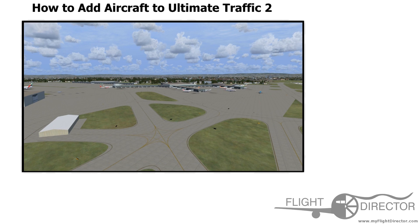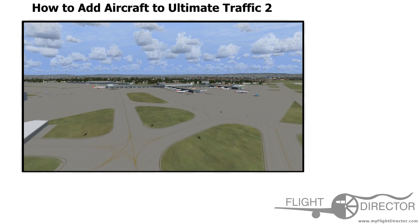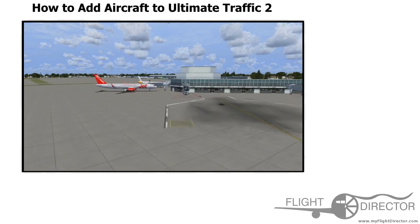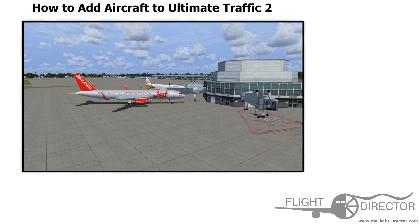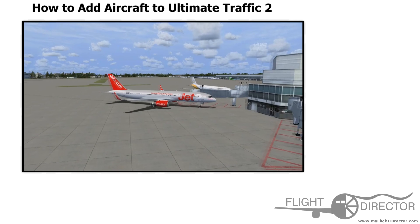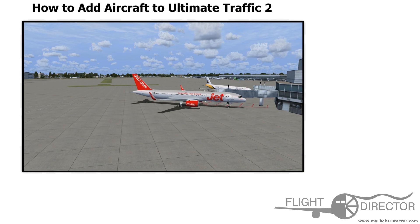Now if you go into Flight Simulator X and go to an airport which is quite inhabited by Jet2 aircraft, such as Manchester Airport, EGCC, you'll notice that the aircraft is installed. There's the aircraft we installed — there's the Friendly Low Fares. As you can see, the installation worked and Jet2 aircraft are now showing up in the simulator. If you guys have any questions, feel free to leave a comment down below. Other than that, this has been Spencer for Flight Director and I hope you guys learned something today.